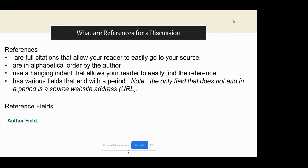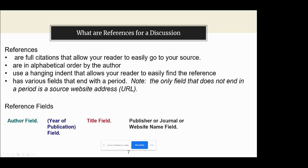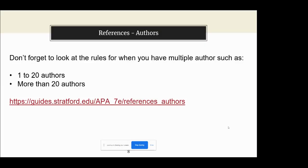These are the reference fields you're going to use, and they correspond to the information you should be looking for when you look at your sources. This is the order in which you put them: first is the author, then the year or date of publication, then the title field. After that, what you include depends on the format — for example, publisher information for a book, journal information for a journal article, or the website name and web address if it's coming from the internet.